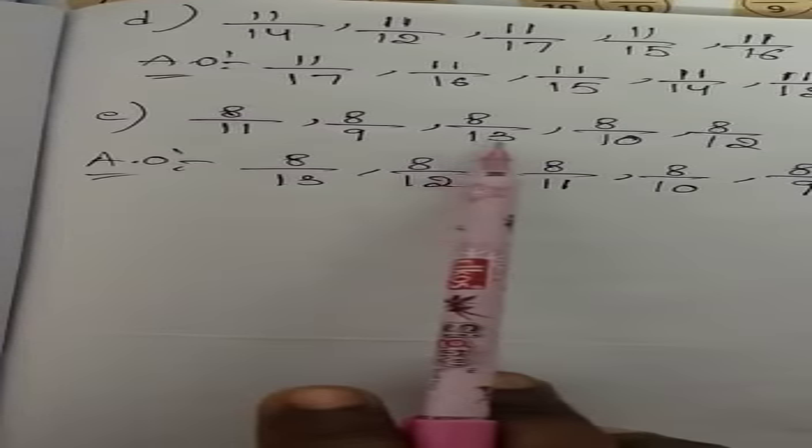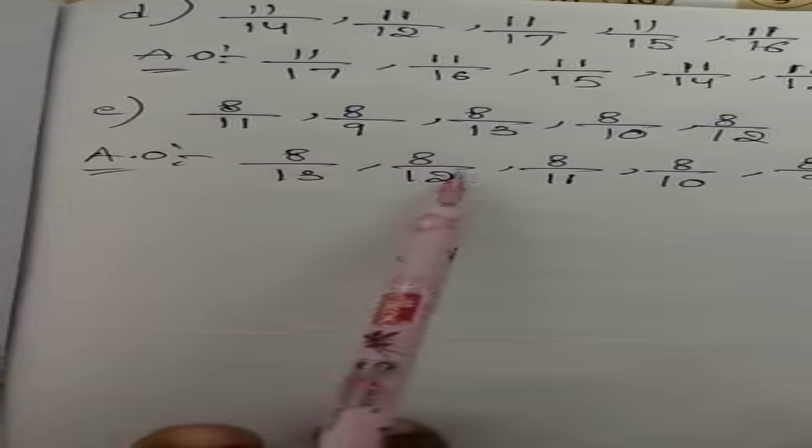Last problem E: 8/11, 8/9, 8/13, 8/10, 8/12. Again numerators are equal, so choose the biggest denominator first. 13 is the biggest number, so 8/13 is the smallest fraction. Write: 8/13, 8/12, 8/11, 8/10, 8/9.